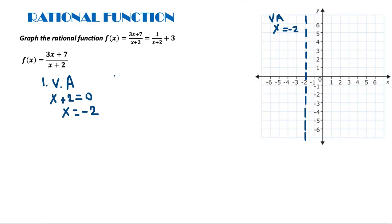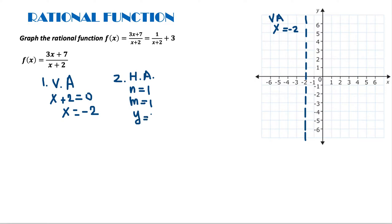Now the second thing — we are looking for the horizontal asymptote. We already know that the degree of the polynomial in the numerator is 1, so m equals 1. The degree of the polynomial in the denominator is also 1, so m equals 1. Because the degrees are equal, we take the leading coefficient of the numerator, which is 3, and the leading coefficient of the denominator, which is 1. So 3 divided by 1 is 3. This is the horizontal asymptote y equals 3.